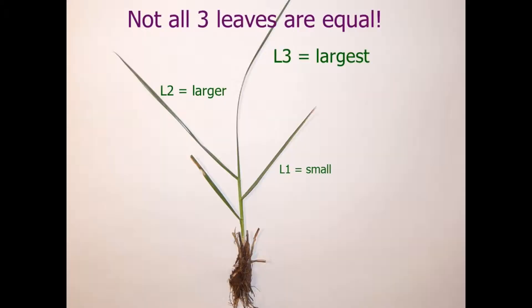If ryegrass forms any part of your pasture, it's really important to understand the principle of three-leaf grazing management. The key element is that when you introduce animals to a paddock, the ryegrass should be at two to three leaf stage, or before canopy closure.